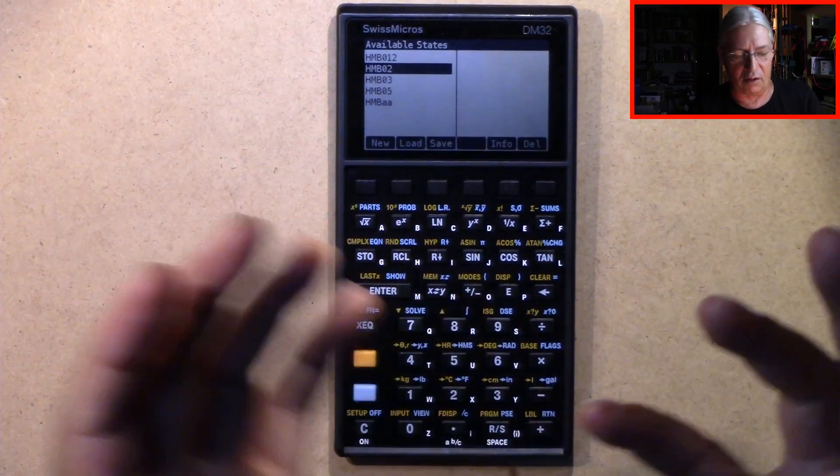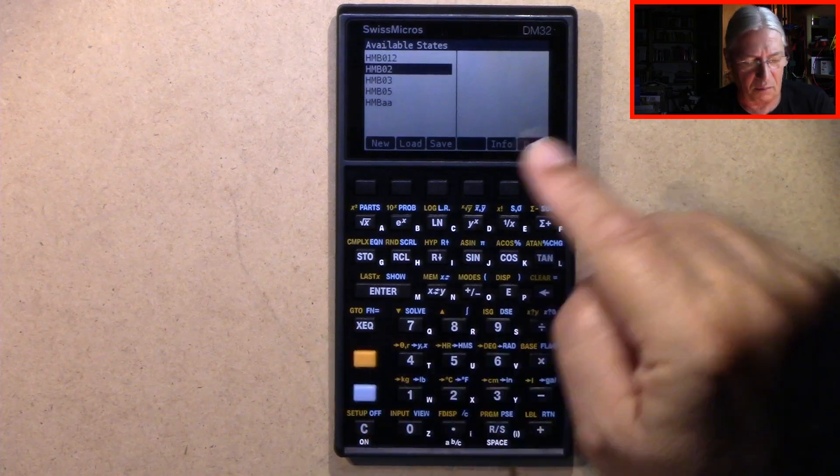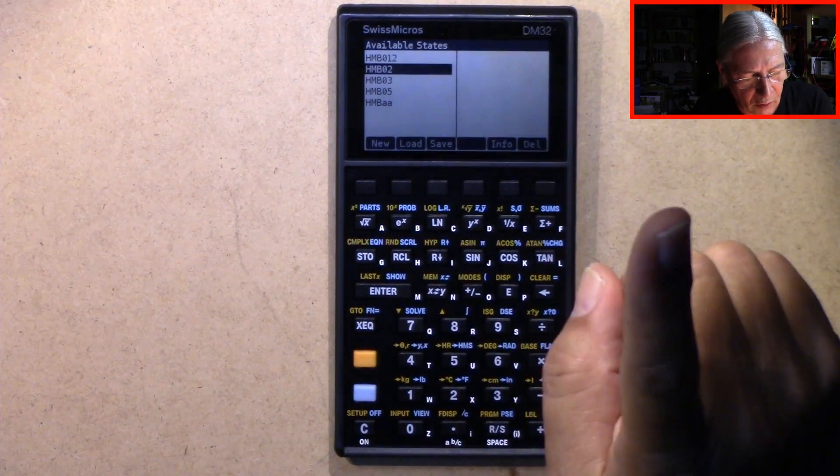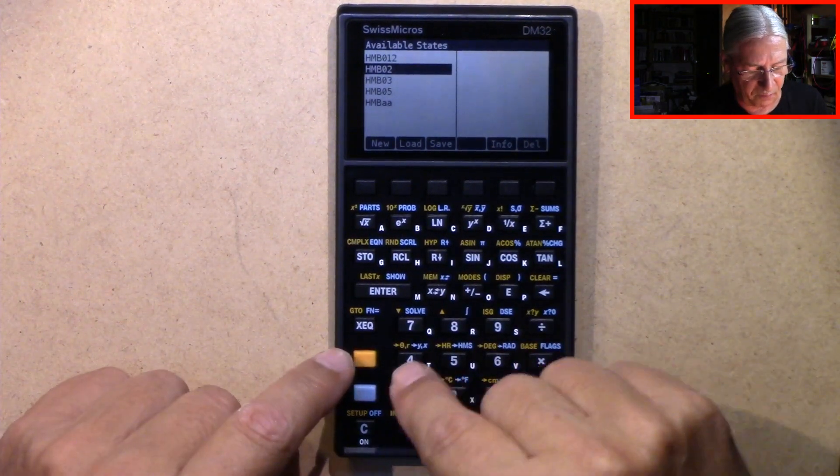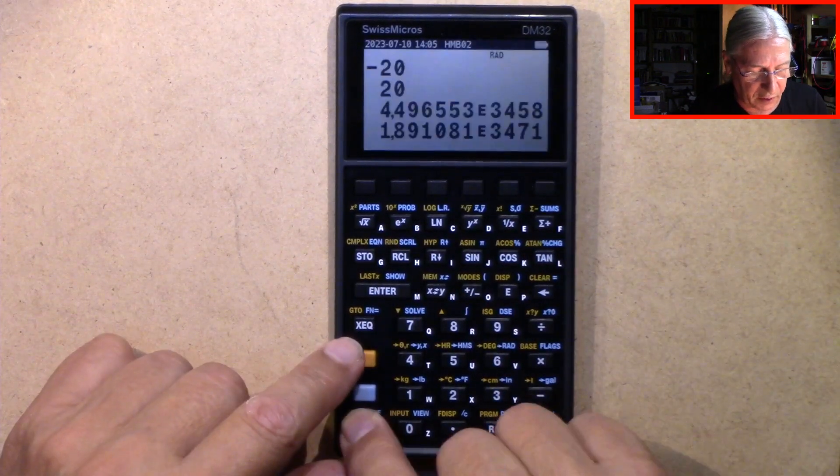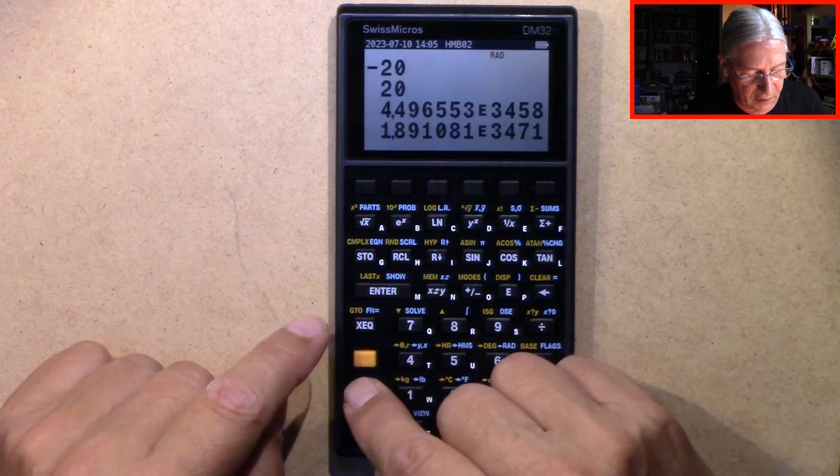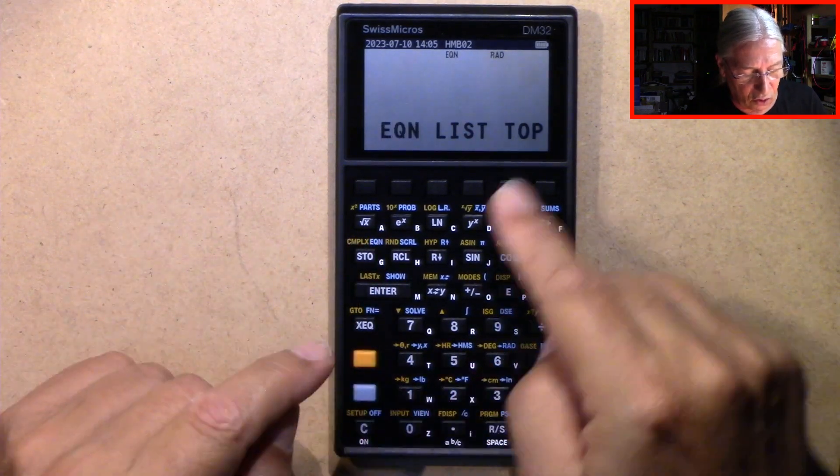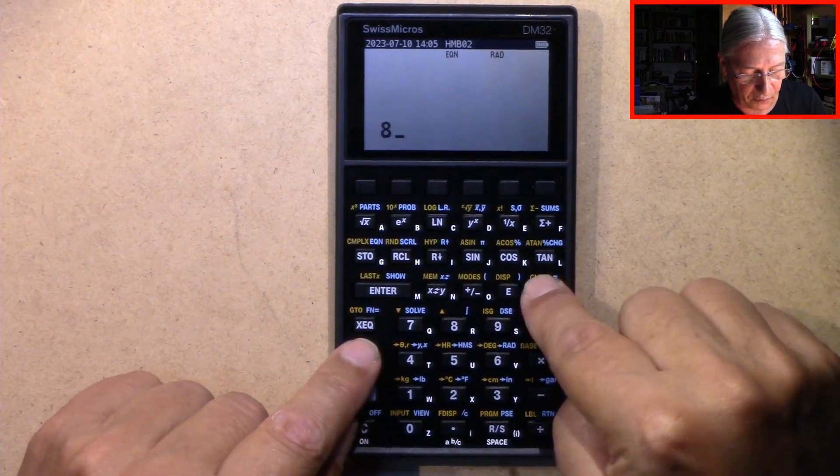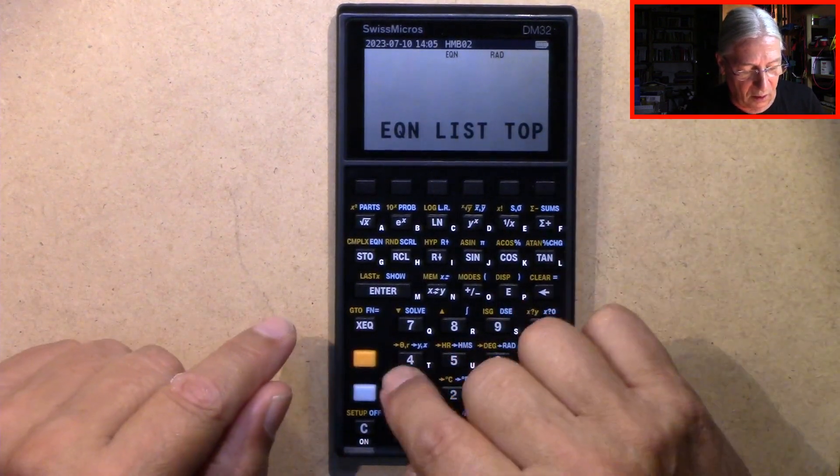For example, we are now in HMB02, which means we have no equations here. You see you can go down, go up. It's just empty, an empty list.